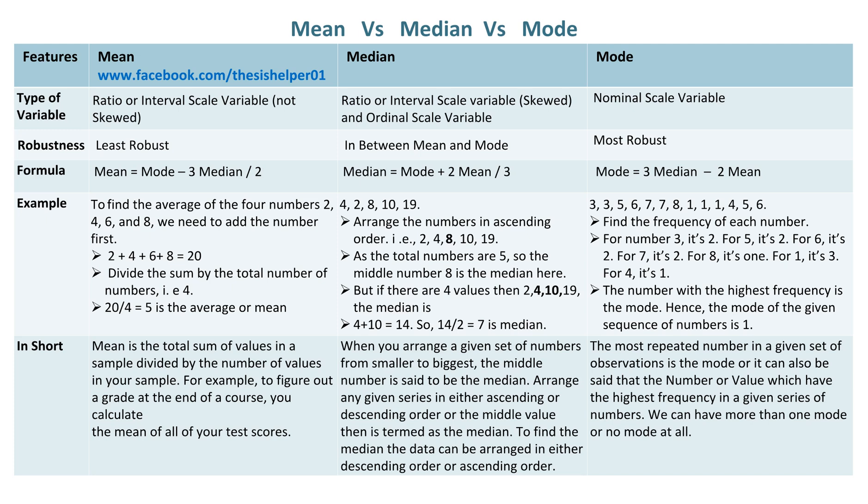Mean is least robust. Median is in between mean and mode. Mode is most robust.